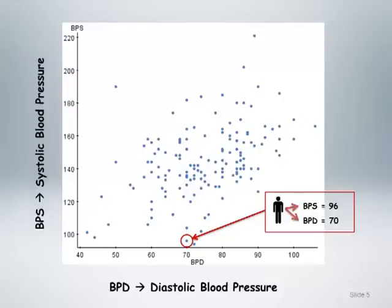Looking at the overall structure of this scatterplot, there is clearly a fair amount of variability among the paired blood pressure values for this sample of data. Still, there does appear to be a pattern of straight-line association moving from the lower left to the upper right, suggesting that as systolic blood pressure increases, so does diastolic blood pressure.